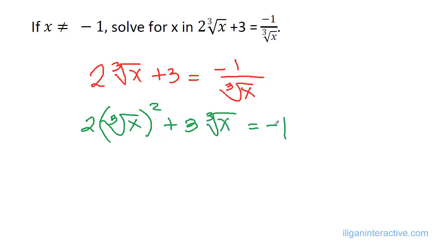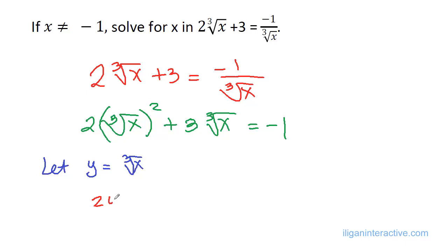We can see from here that this looks like a quadratic form if we let y equal to the cube root of x. We can now write it in that form: 2y² + 3y, and moving the negative 1 to the left, it becomes plus 1 equals 0.